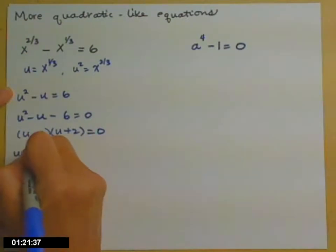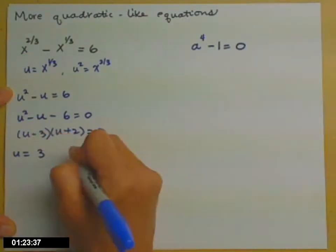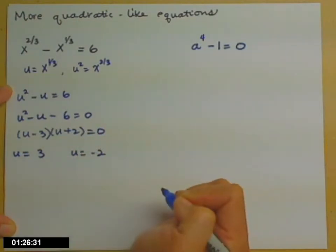Setting each of those factors equal to zero when solving gives us u equals three, and u equals negative two.